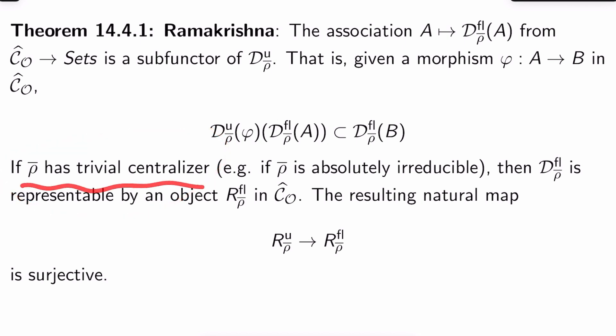So if ρ̄ has trivial centralizer, then this functor is representable. There's a representing ring, which we call R^fl_ρ̄, and it's in Ĉ_O still. By universal properties, there should be a map from R^u_ρ̄ to R^fl_ρ̄, right? And the final part of the theorem is that this map is surjective. In particular, this is a quotient of this.